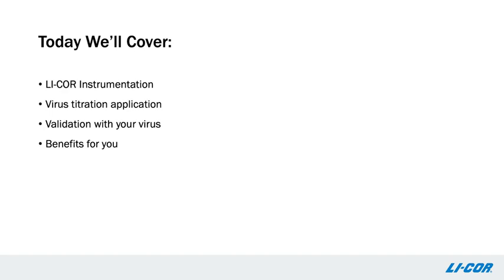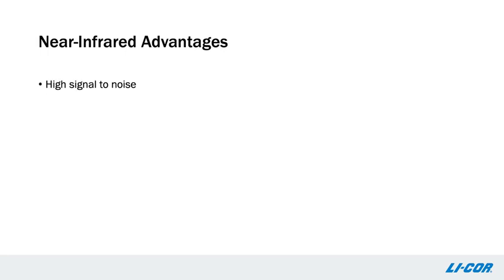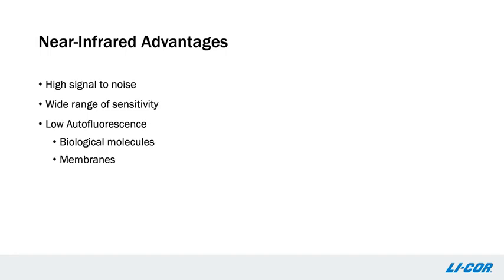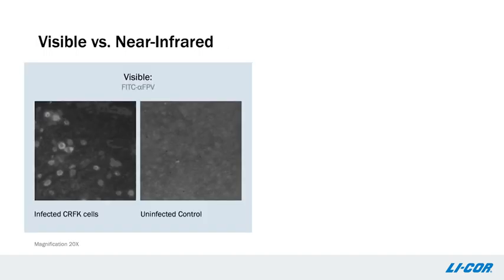What makes the Odyssey imager so special? LICOR Odyssey imagers utilize near-infrared-based scanning, which provides high signal-to-noise ratios and a wide range of sensitivity. Autofluorescence from biological molecules, membranes, and plastics, as well as light scatter, are dramatically reduced in the near-infrared region. The difference can be clearly seen in this photomicrograph of Crandall feline kidney, or CRFK, cells infected or mock-infected with feline panleukopenia virus, or FPV.